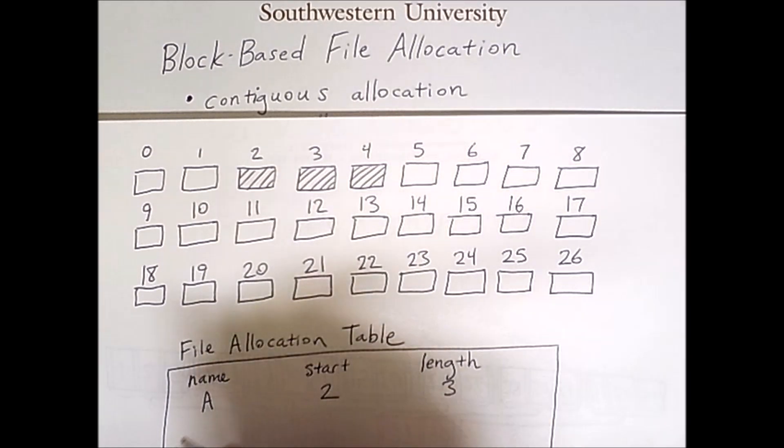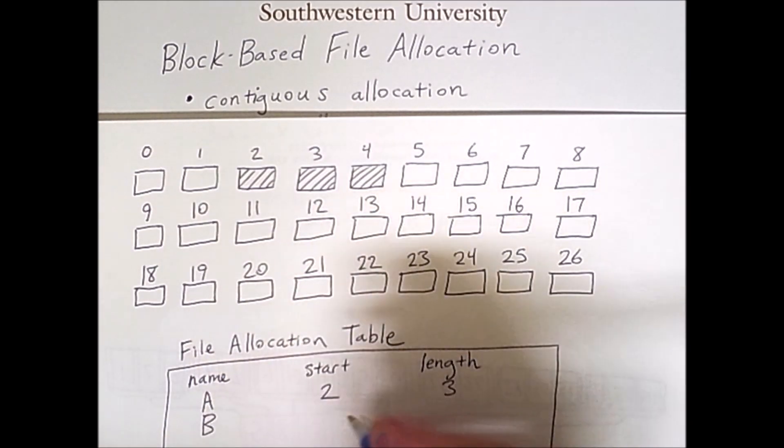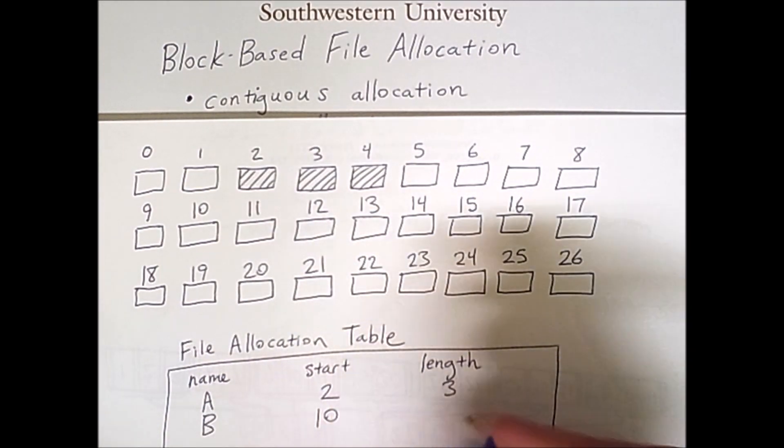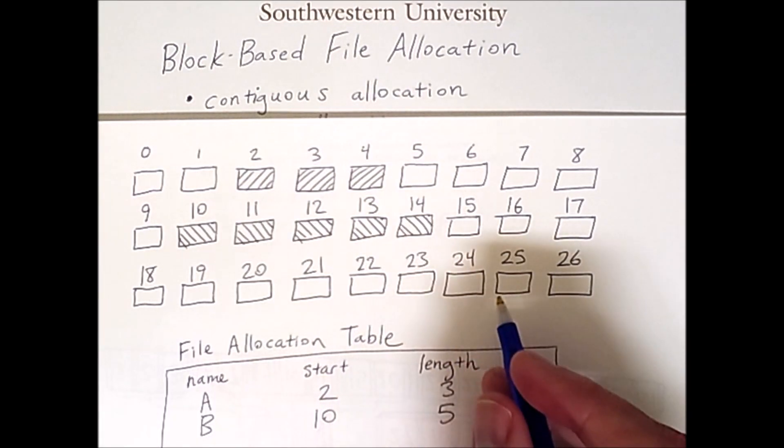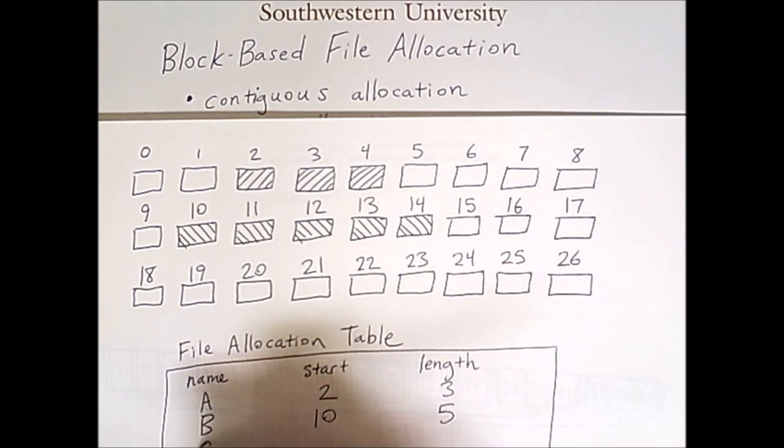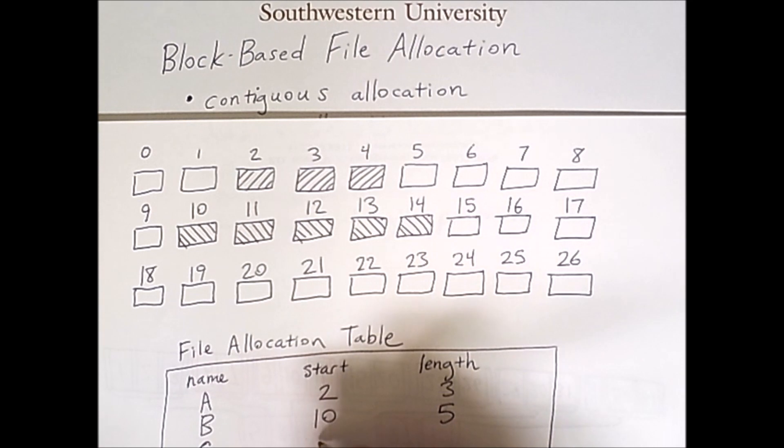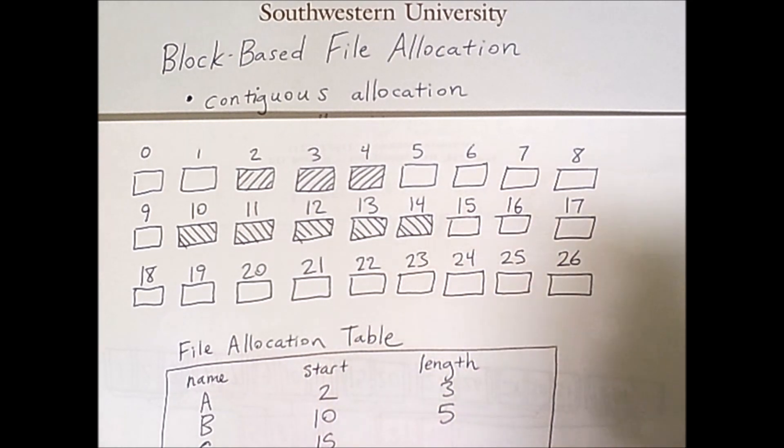Another file called B could start at block 10 and have a length of 5. And that would look like this. So now we have two separate files. Now files could also be directly adjacent to each other. For example file C could start at block 15 and have a length of 6. And that would look like this.